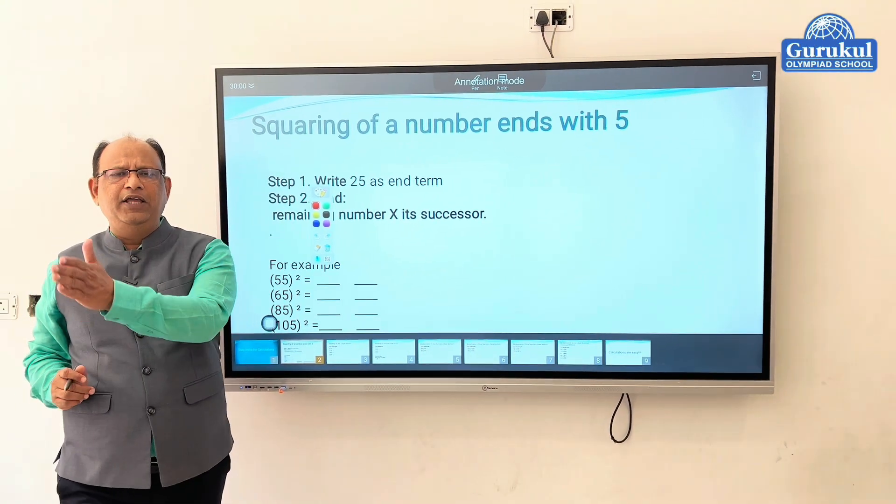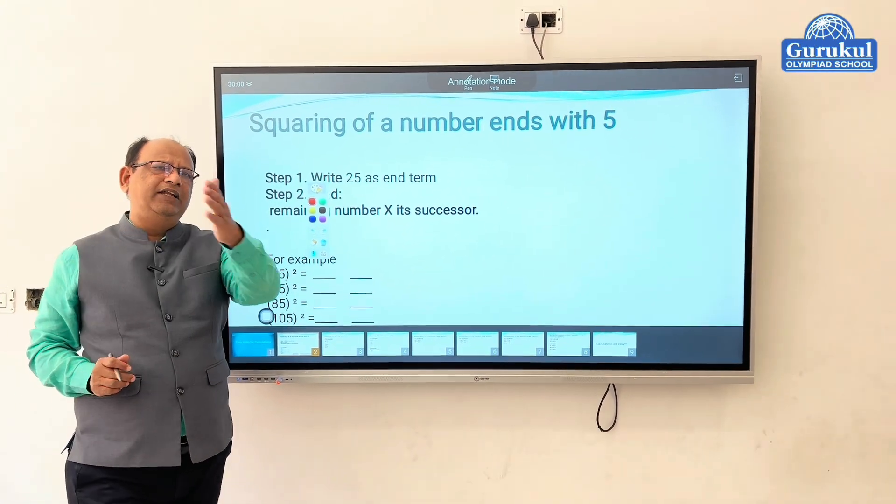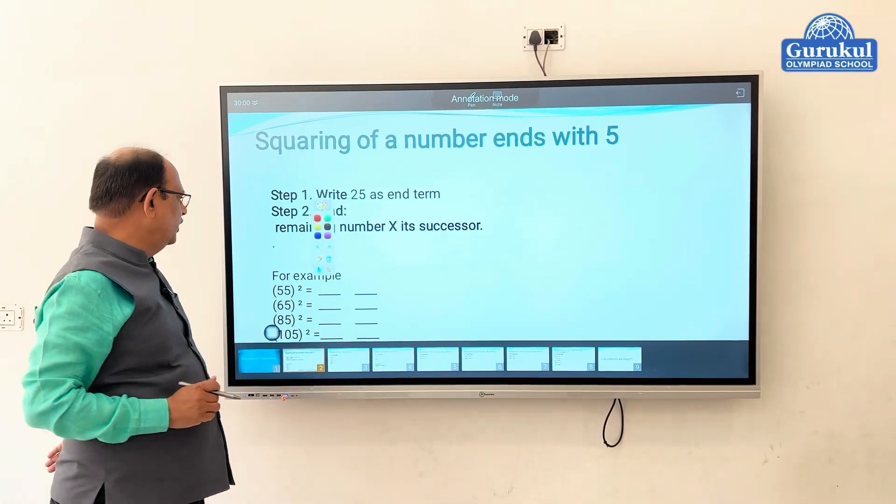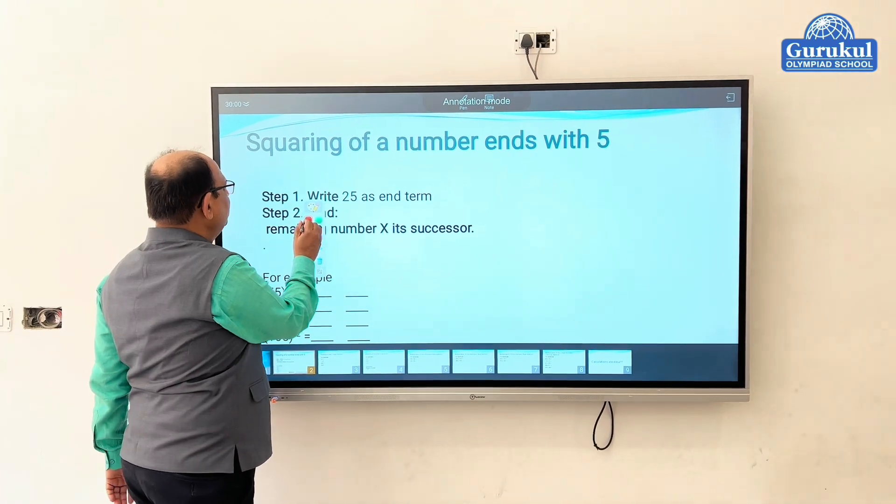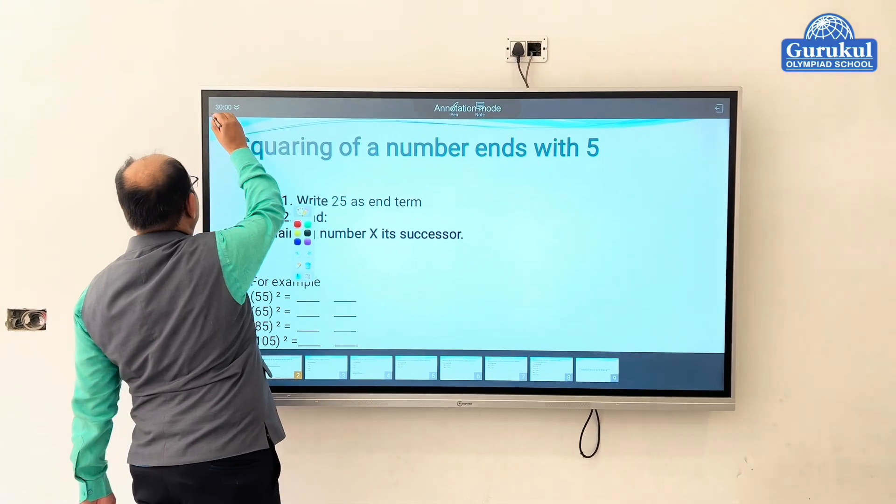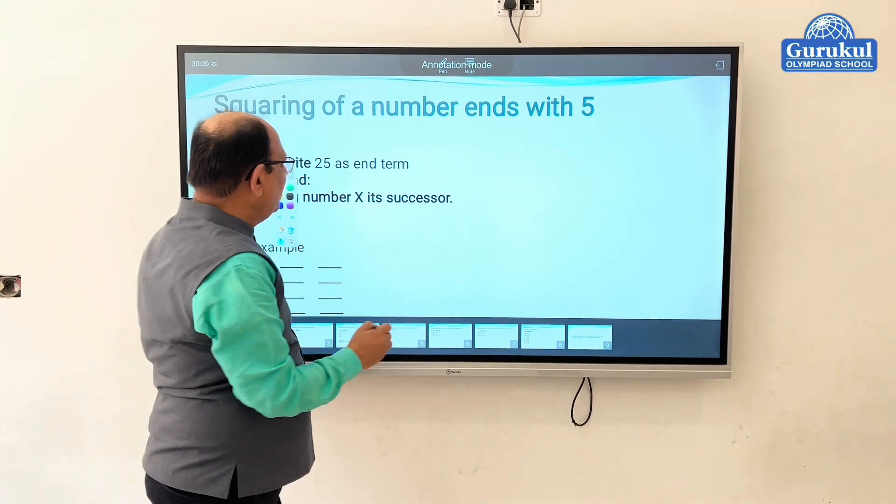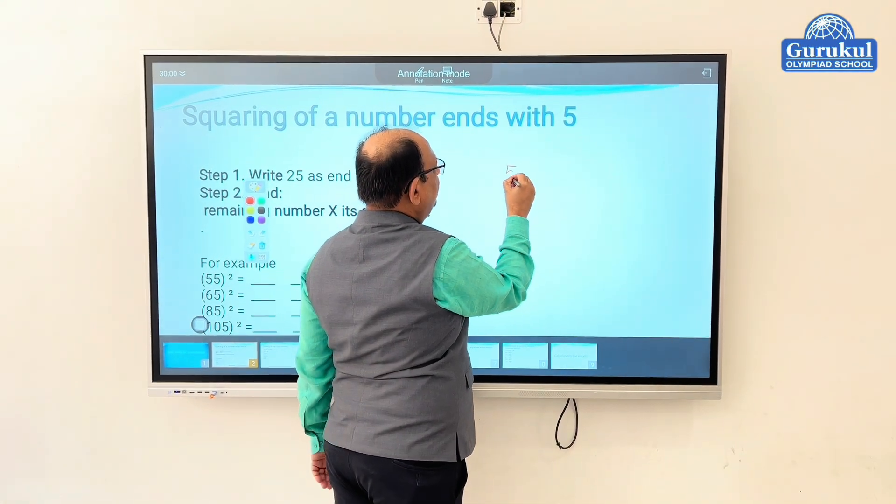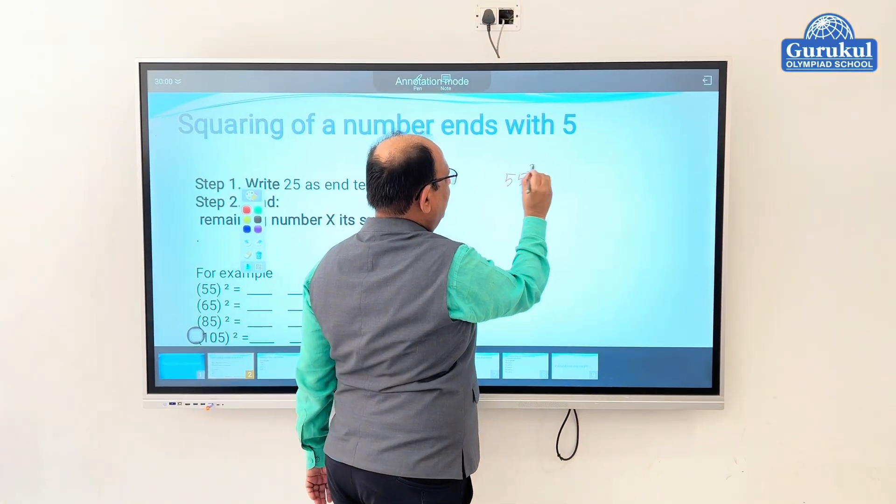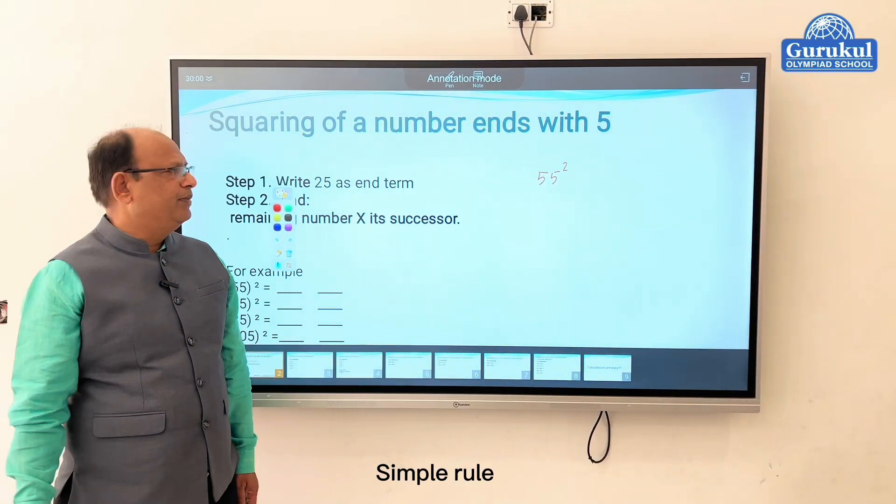Any number which is ending with five: fifteen, twenty-five, thirty-five, fifty-five, seventy-five, ninety-five, hundred and twenty-five, so on and so forth. Let's see how we can do these calculations. For all that, we will take an example. Let's say fifty-five. Fifty-five ka hamei square nikalna hai.